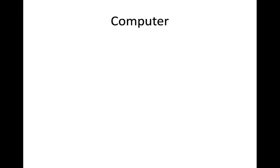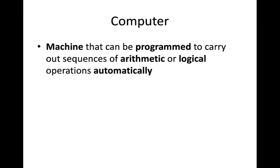First of all, we will see our definition for a computer. A computer is a machine that can be programmed to carry out sequences of automatic or logical operations. It is a machine like any other machines, but this machine can be programmed to carry out some operations — automatic or logical. We give some programs to the computer and the computer will deliver some output.